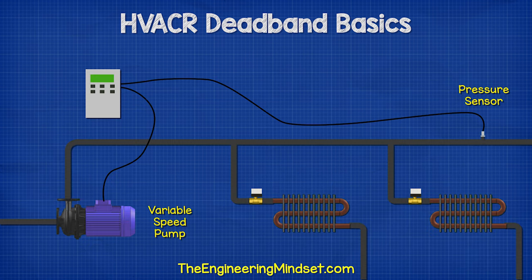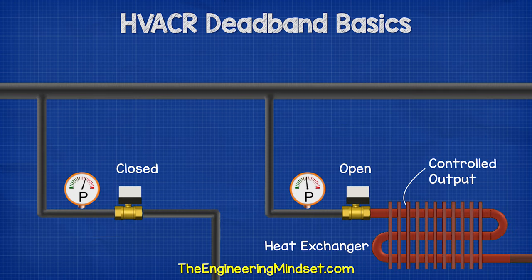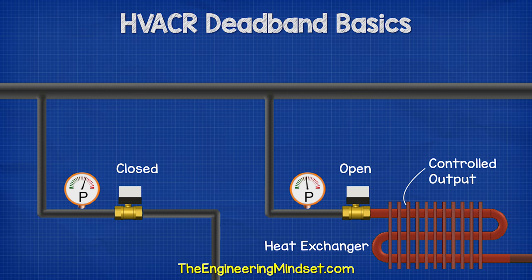To overcome this, we could install a pressure sensor and a variable speed pump. As each valve opens and closes, the pump changes speed to maintain a constant pressure and thus a constant flow rate through the radiators. This happens regardless of when another valve opens or closes.